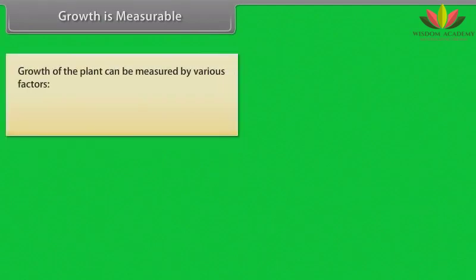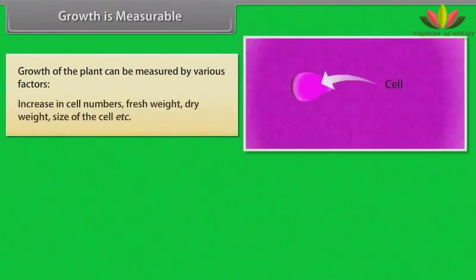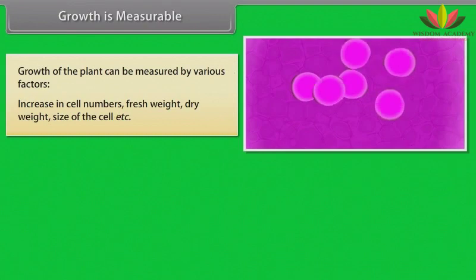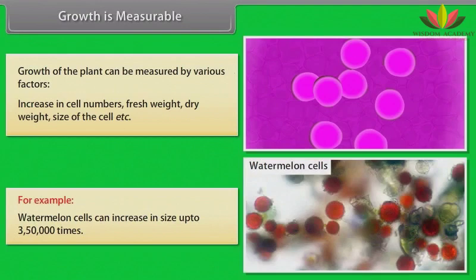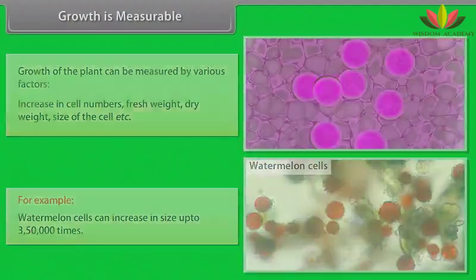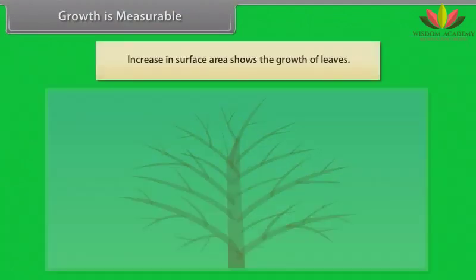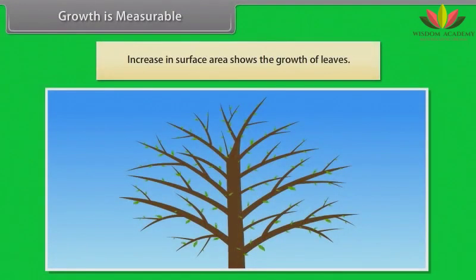Growth is measurable. The growth of plants can be measured by various factors: increase in cell numbers, fresh weight, dry weight, size of the cell, etc. For example, watermelon cells can increase in size up to 3,50,000 times. Increase in surface area shows the growth of leaves.